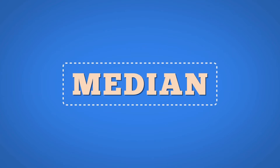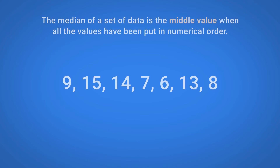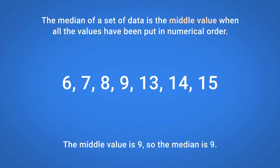Finding the Median. The Median of a set of data is the middle value when all the values have been put in numerical order. Here is a set of data. If we put the data in numerical order, we can see that the middle value is 9. So the Median of this set of data is 9.